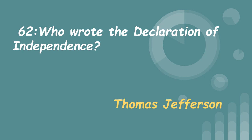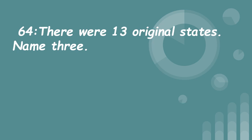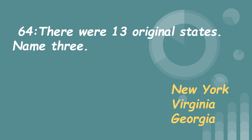63. When was the Declaration of Independence adopted? July 4, 1776. 64. There were 13 original states. Name 3. New York, Virginia, Georgia.